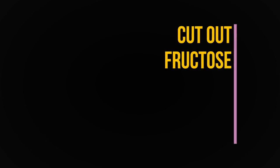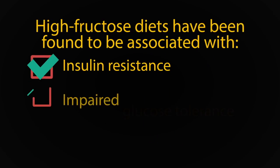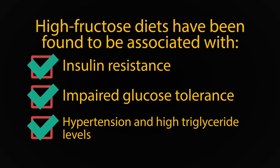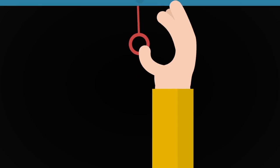Another really good question. Tip number one: cut out your fructose intake. Fructose is a monosaccharide found in a lot of things, including table sugar. High fructose diets have been found to be associated with things like insulin resistance, impaired glucose tolerance, hypertension, and high triglyceride levels.